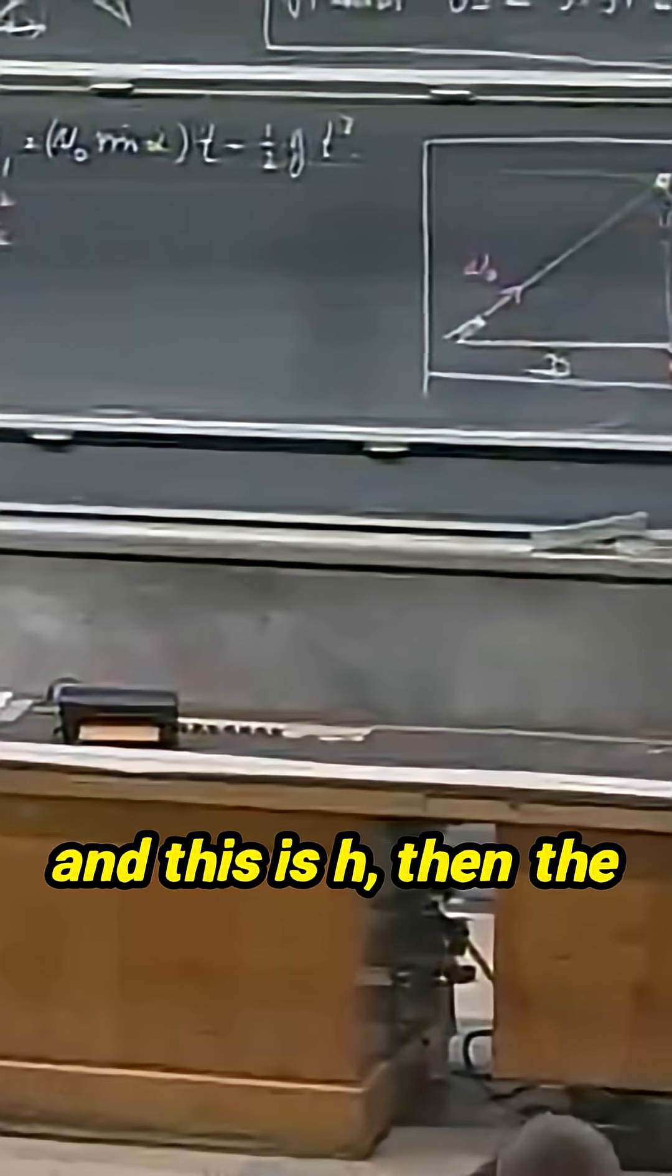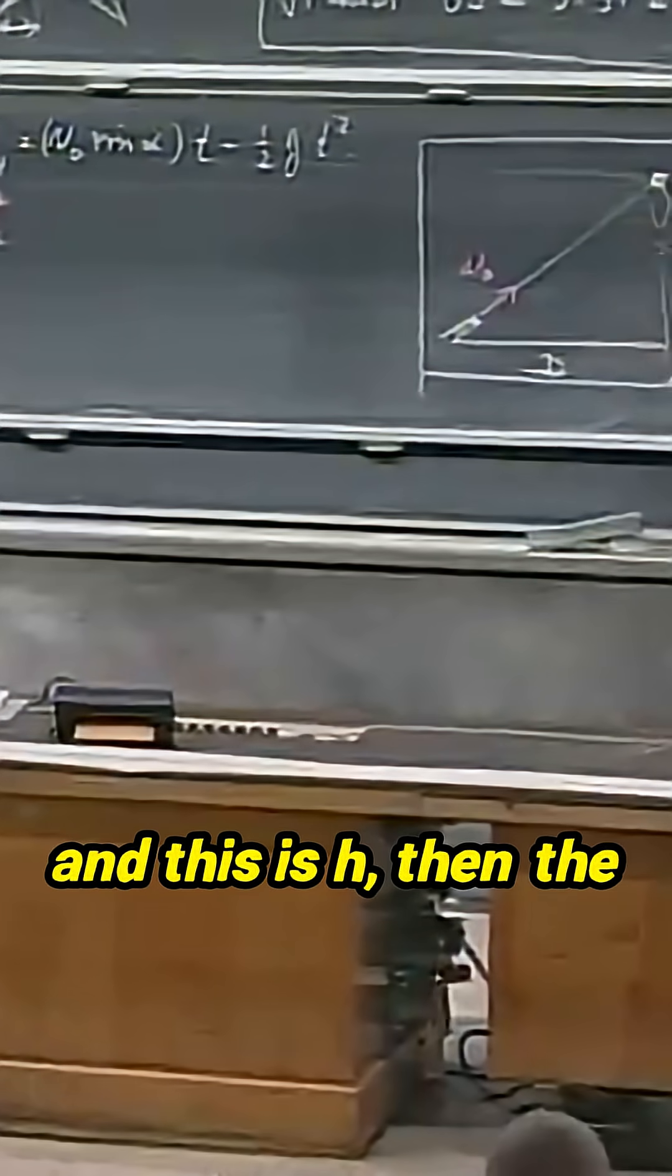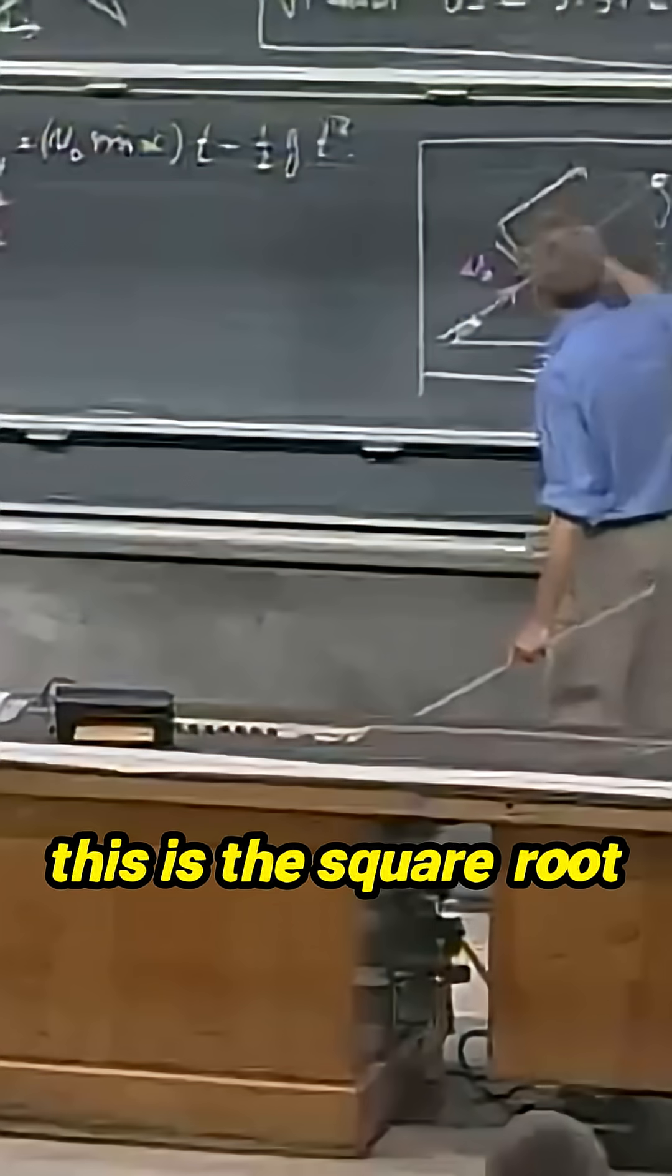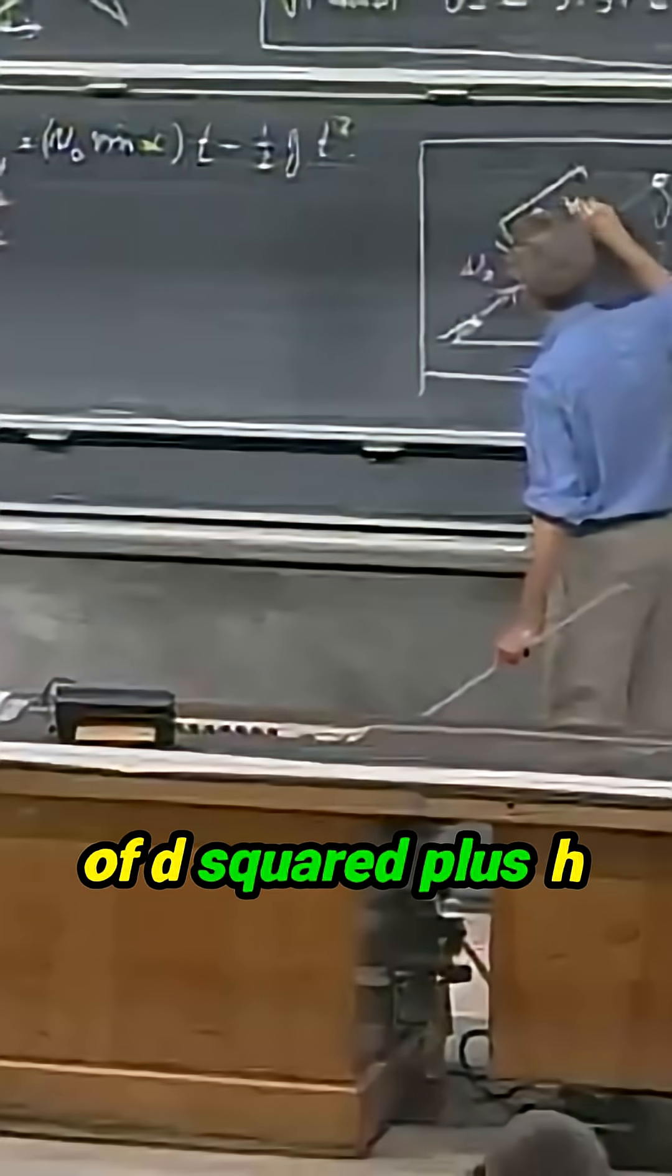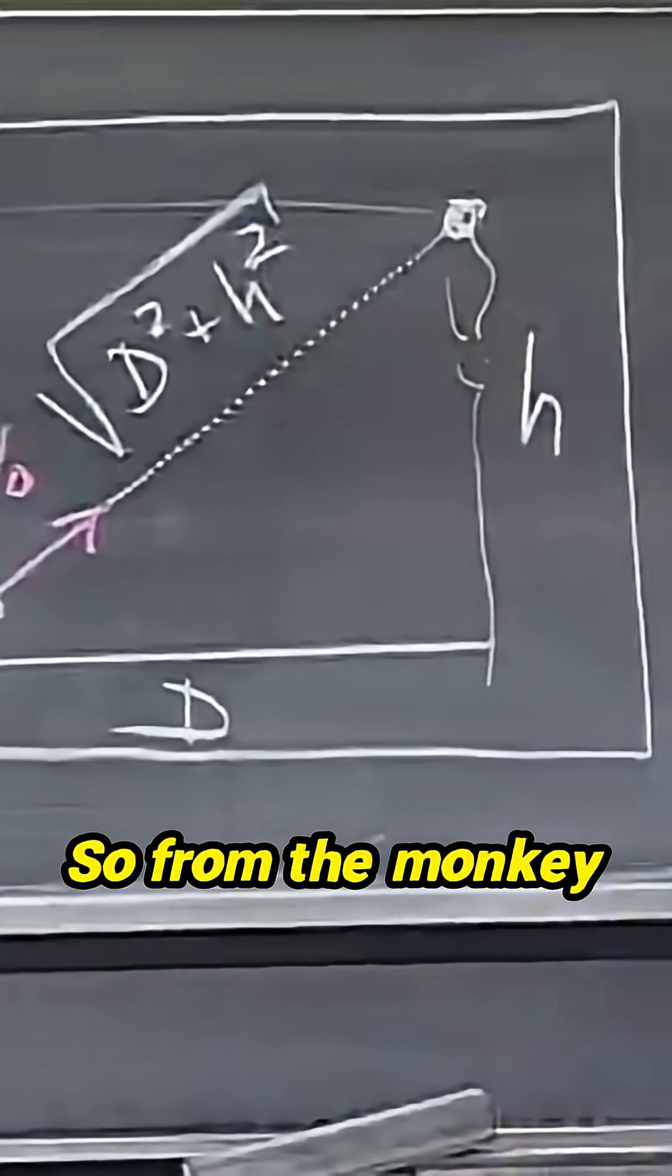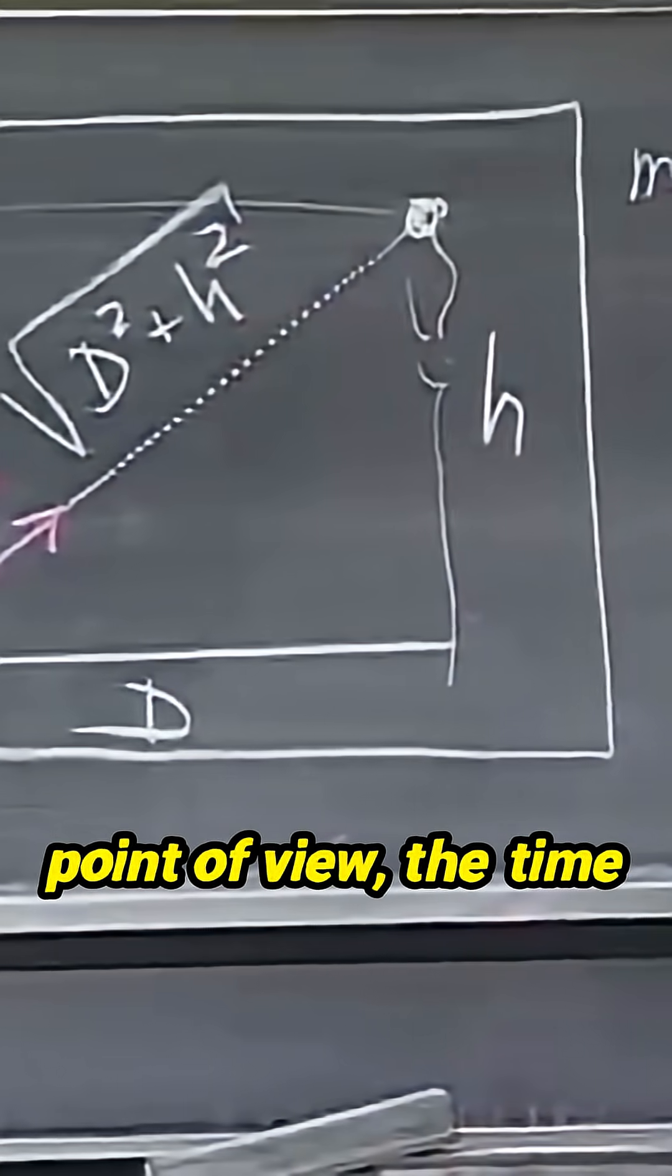If this distance is d and this is h, then the monkey says, aha, this is the square root of d squared plus h squared.